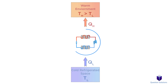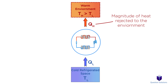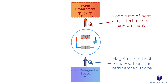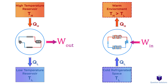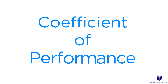If we were to use high and low temperature environments, our diagram would look like this. We would have a warm environment here and QH represents the magnitude of heat rejected to the environment. On the bottom, we have the cold refrigerated space. QL represents the magnitude of heat removed from the refrigerated space. We also have the work input required by the compressor. Just to recap, this is what the schematic for a heat engine looked like from the previous video.